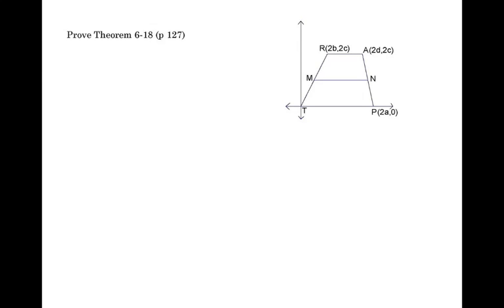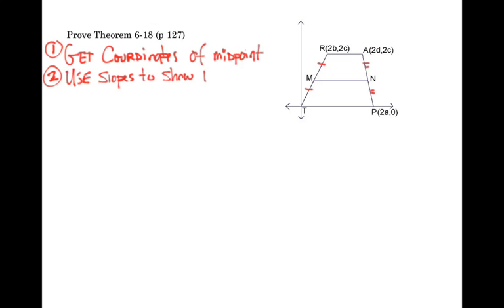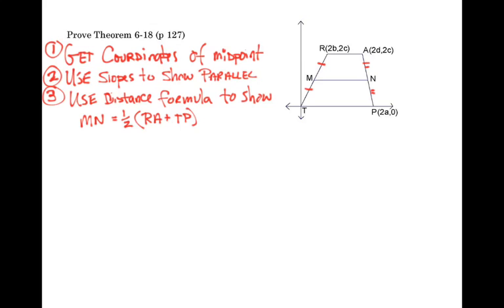We're going to prove this theorem about the mid-segments of a trapezoid. We need to get the coordinates of the midpoints and then show that MN is parallel to our bases, and that it's half the sum of the distances. We'll use slopes to show parallelism, using rise and run. The distance formula will help us figure out the one-half sum of the bases.